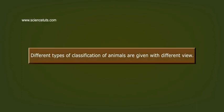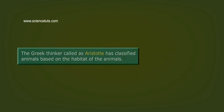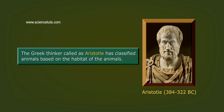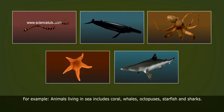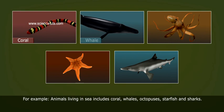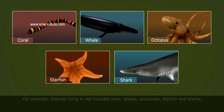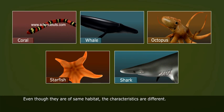Now let us learn about the classification in detail. Different types of classification of animals are given with different views. The great thinker Aristotle classified animals based on their habitat. For example, animals living in the sea include coral, whales, octopuses, starfish, and sharks. Even though they share the same habitat, their characteristics are different.